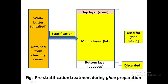Regarding energy cost of preparation: direct cream method requires the highest energy because cream contains the highest amount of moisture, which requires more energy for evaporation. Creamery butter requires less energy, and pre-stratification requires the least. So while pre-stratification is the most energy-efficient, it produces slightly less flavorful ghee, whereas direct cream and creamery butter methods are more energy-intensive but yield better flavor.